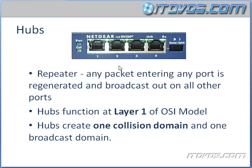Hubs function at layer one of the OSI model. We're going to be talking about the OSI model later on, but this is something we need to burn into our brain — hubs function at layer one. Hubs also create one collision domain, as I mentioned, and one broadcast domain.